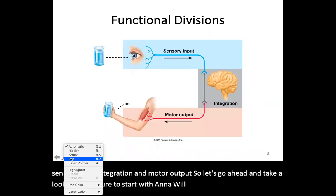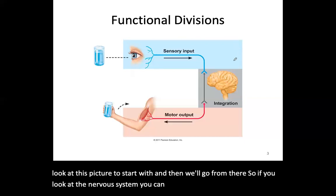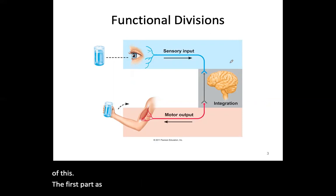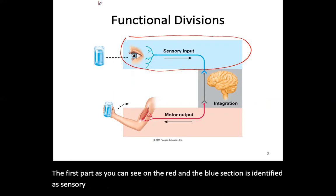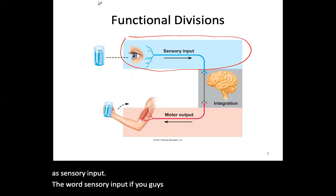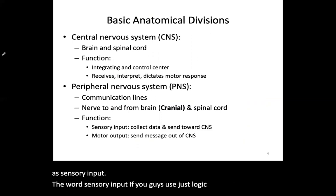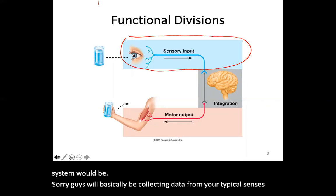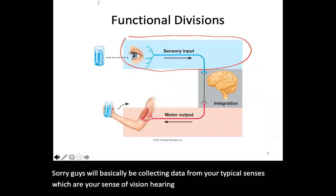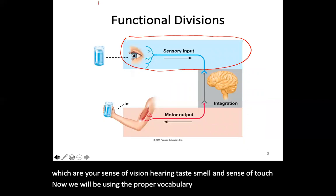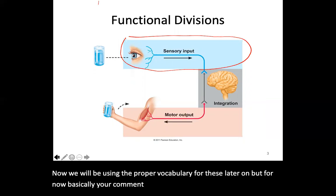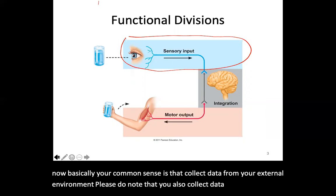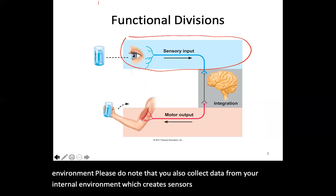Looking at the nervous system, you can see clearly there are three branches. The first part, shown in the blue section, is identified as sensory input. Using basic logic, sensory input would be collecting data from your typical senses: vision, hearing, taste, smell, and touch. Please note that you also collect data from your internal environment, which creates senses like your vestibular sense — your sense of balance.